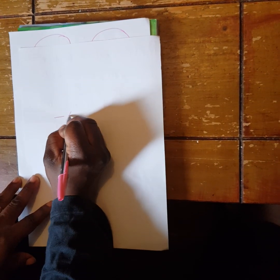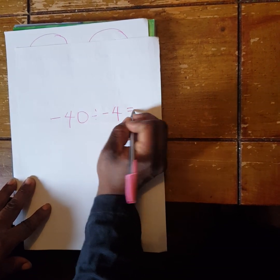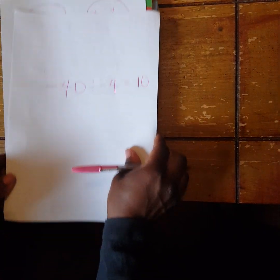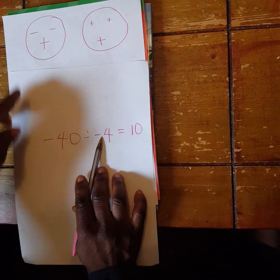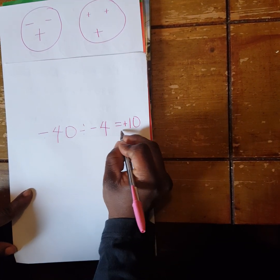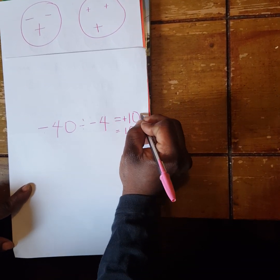If we have -40 divided by -4, now 40 divided by 4 is 10. Now I look at the signs, I have got negative and negative, so my final answer will be a positive. And now positive 10 is the same thing as just 10, both are correct.